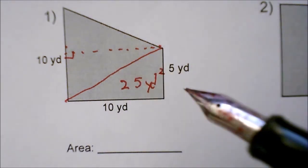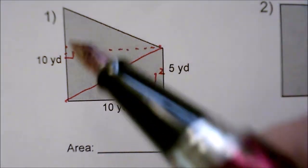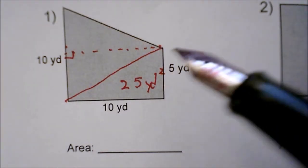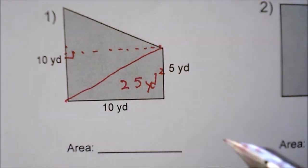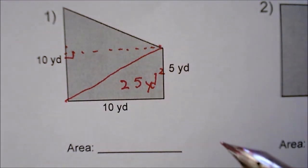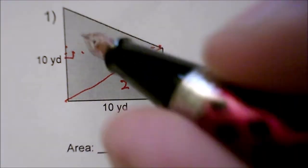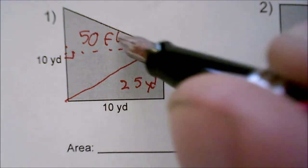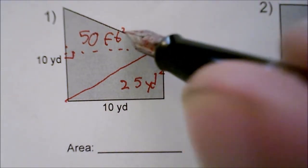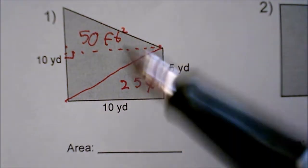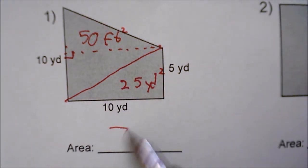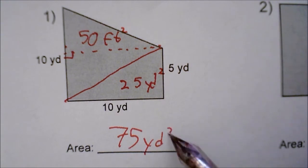For this larger triangle up top, it has a base of 10 and a height of 10. So that will be 10 times 10, which is 100. 100 divided by 2 gives me an area of 50 yards squared. Combining our two areas gives us a total area of 75 yards squared.